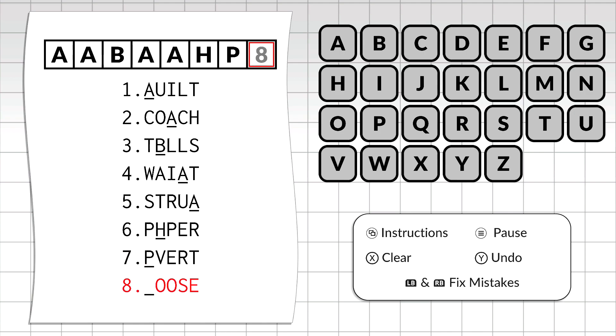Once you get all of the boxes filled out, hit both left bumper and right bumper to use the fix feature. If you have eight mistakes, you should fix eight of them at once.